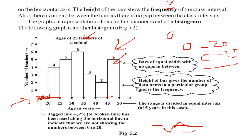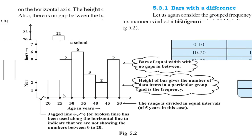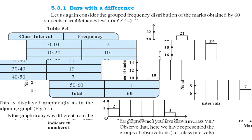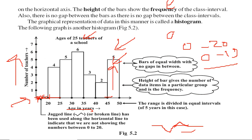The rest remains the same. These are bars of equal width with no gaps in between because we have class intervals which are overlapping. The heights of the bars give the number of data items of a particular group, which is the frequency. There is a little difference between these two graphs: one starts from zero, this one is not starting from zero, it's starting from 20, so we have a jagged or broken line.